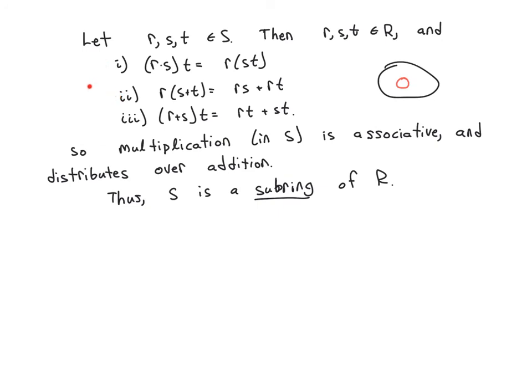And so these statements are already true. Therefore, multiplication is associative and distributive. And so you satisfy all the axioms to be a ring. And so S is a subring of R.